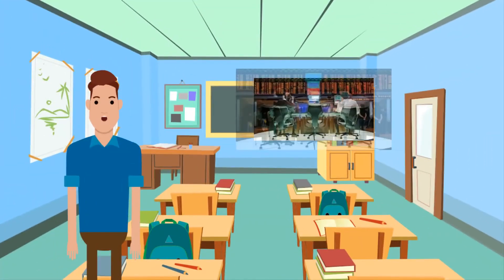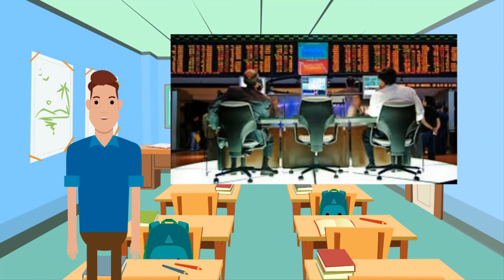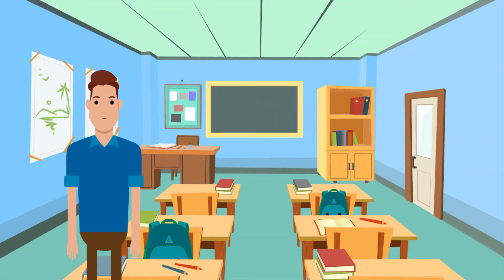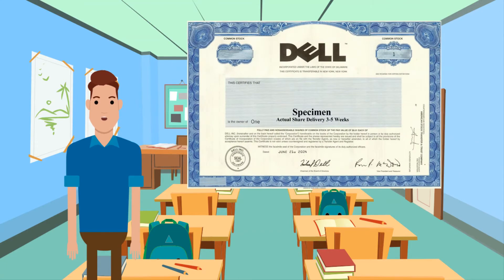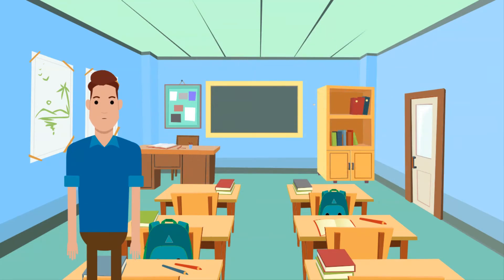A stock broker is an individual who buys and sells stocks and securities through a stock exchange to clients. These can be to retail and institutional buyers. This is an example of a share certificate — in this case, it is a share of Dell computers. It must be noted that only shares of public companies are listed on the stock exchange.